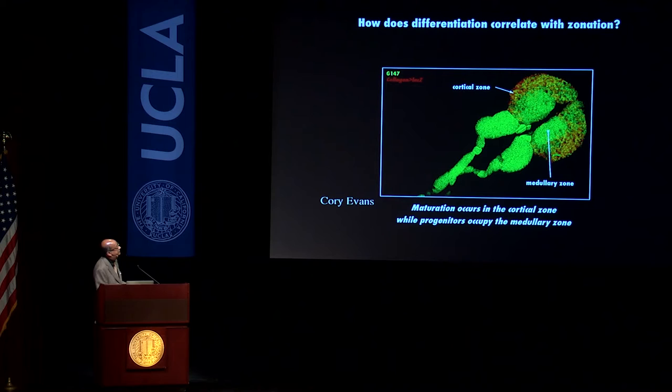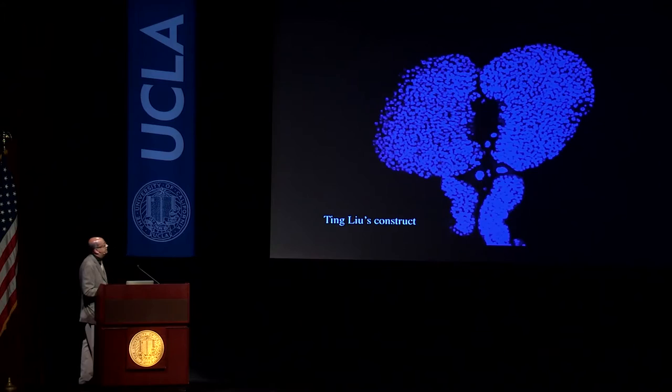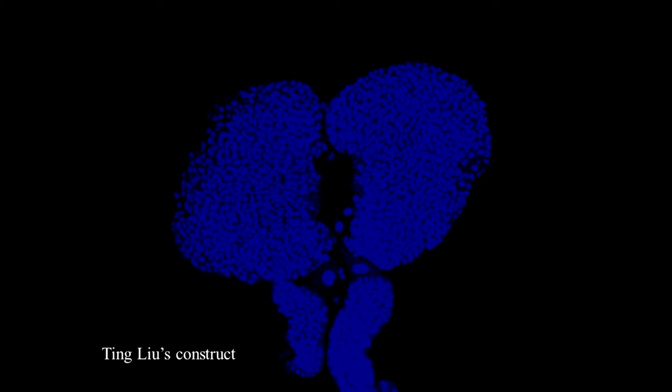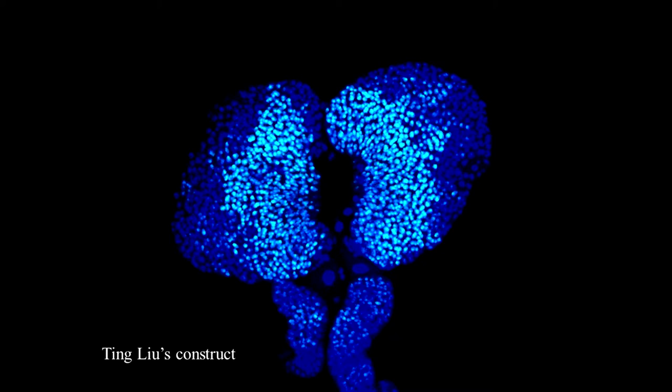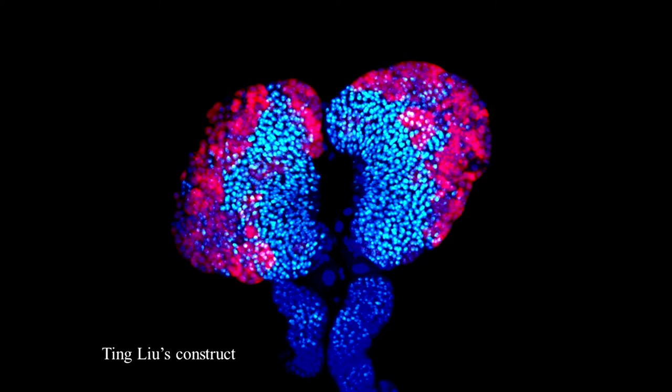The medullary zone has what we call progenitor cells. I would have liked to call them stem cells, but hematopoietic stem cells in mammals have certain properties we cannot fulfill here. These progenitor cells give rise to all the different cells seen in the cortical regions. Graduate student Ting Liu made constructs to visualize this. We also have progenitor cells, but ours are in bone marrow. Here, all the cells in the hematopoietic organ are visible — progenitors glowing in ultraviolet, differentiated cells in red.